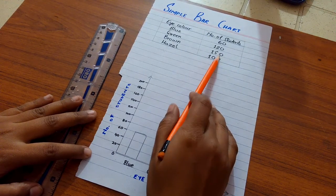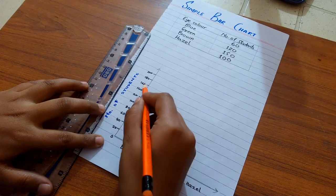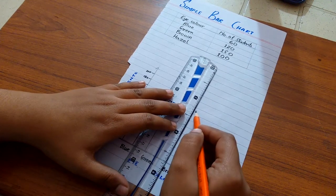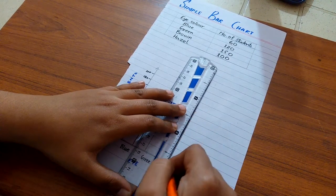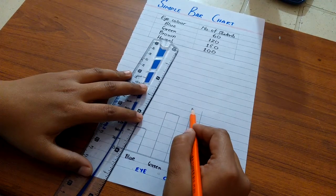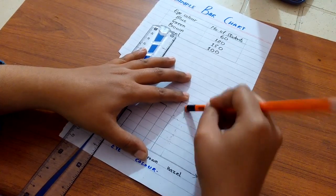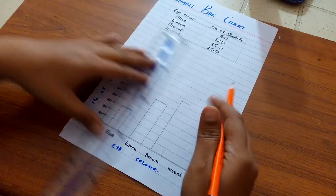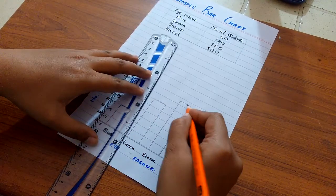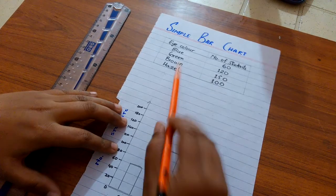In the center, this is quite thin, so I am going to widen it. Now 100 students which have the hazel eyes, here is 100.